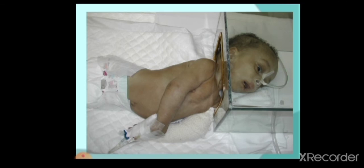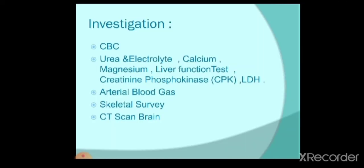A child prone to asphyxia has decreased oxygen delivery to the brain and body and may have abnormal posture, including arching of the back, hyperextension of the neck, and extension of both upper and lower limbs. Investigation of asphyxia includes CBC, urine, electrolytes, calcium, magnesium, liver function tests, CK and LDH, because all these are affected by decreased oxygen supply. We also do arterial blood gas, skeletal survey, and CT scan or ultrasound of the brain.